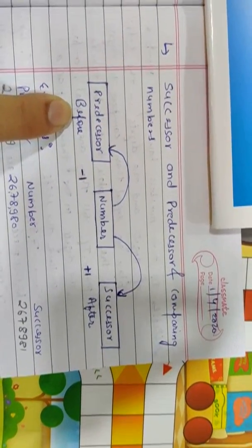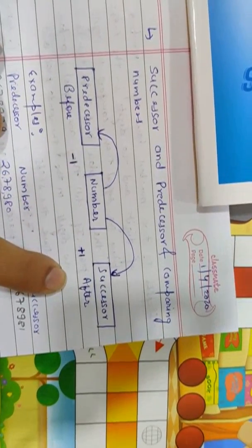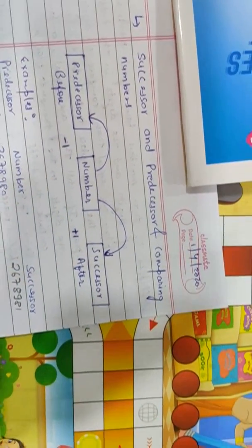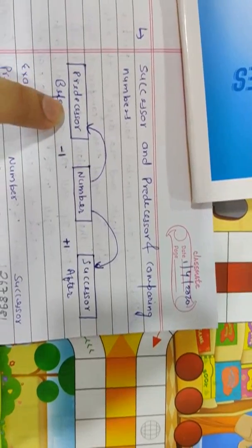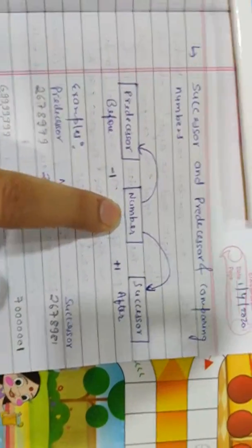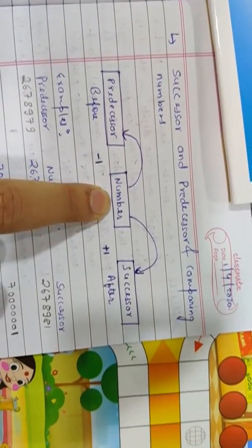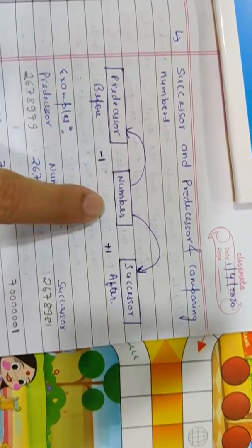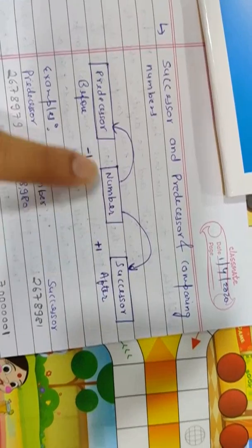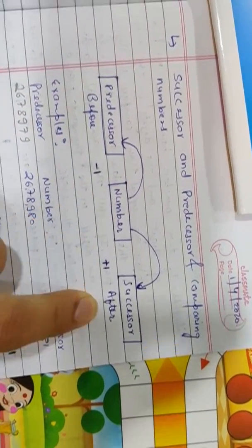Have you already heard about 'before' and 'after' in Grade 4? I hope you have. Yes, the same thing we have to learn again here. We have given a number — whatever the number will be given to us, we just minus 1 or plus 1. Minus 1 means before, plus 1 means after.